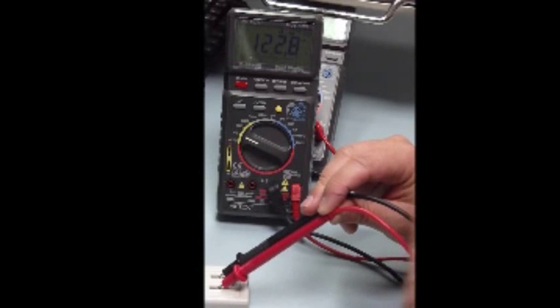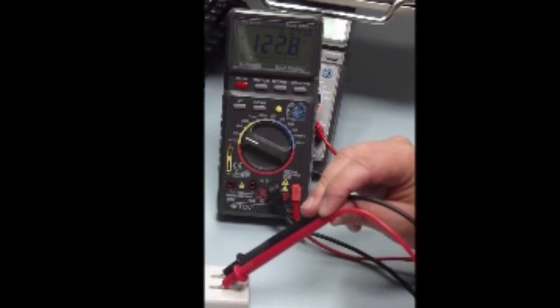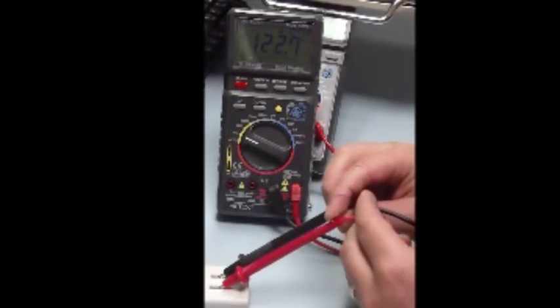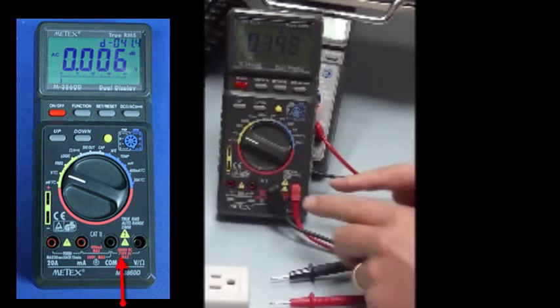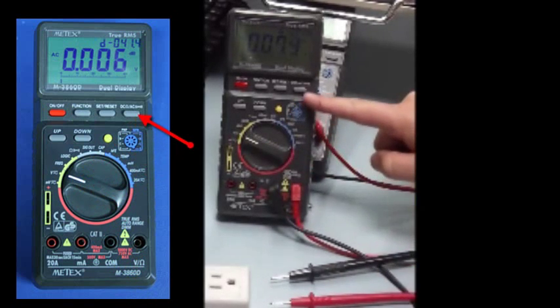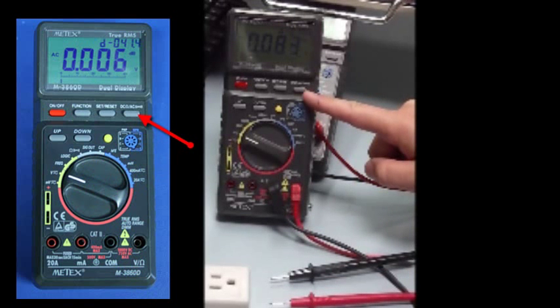So again, to highlight: voltage measurements are always taken across the item we want to measure. We must set the multimeter properly: where the leads are positioned, where the dial is set, and what range or measurement we're looking to do. In this case, it's AC voltage.